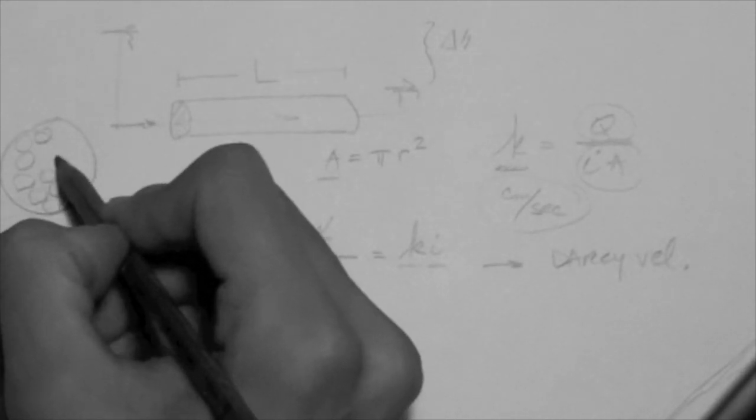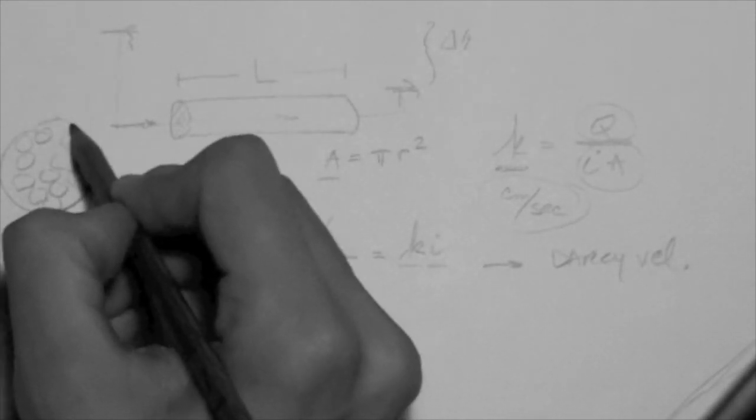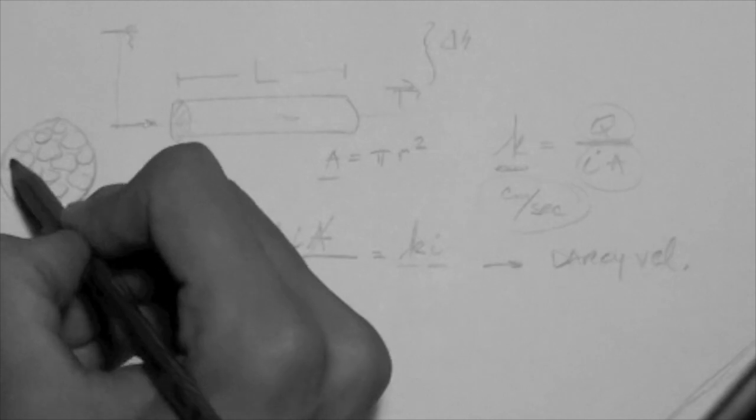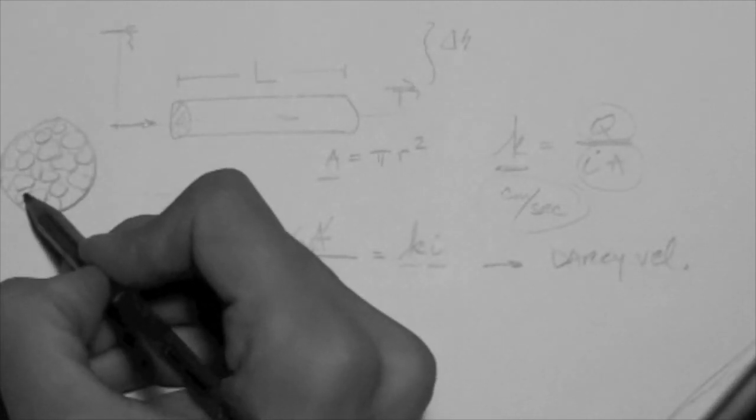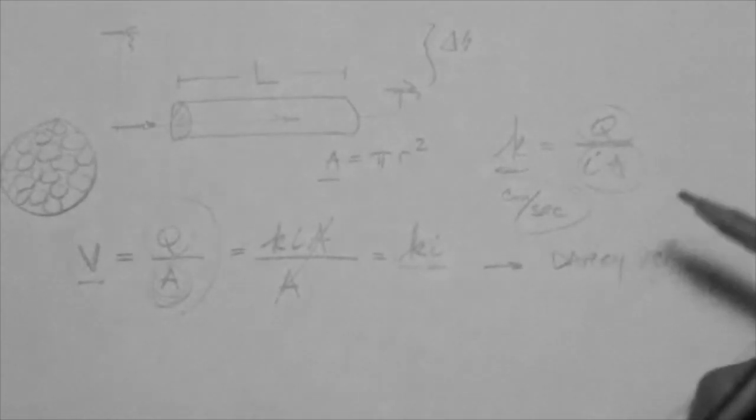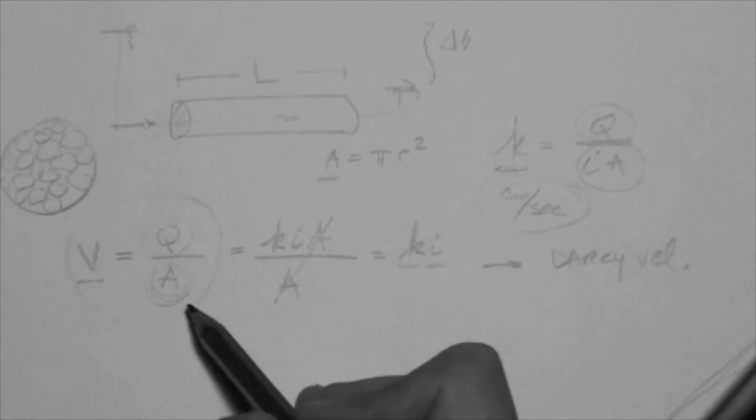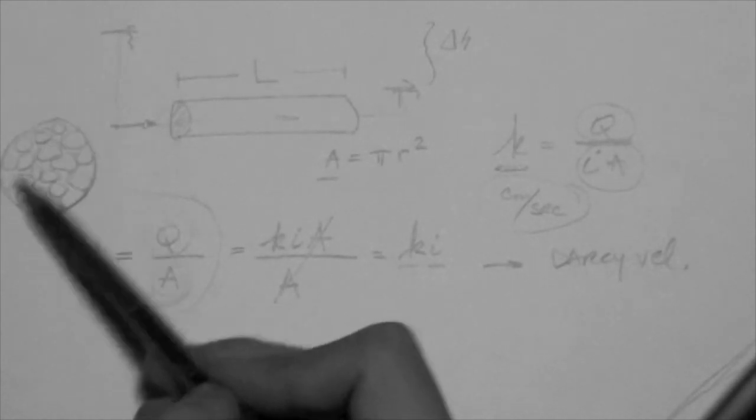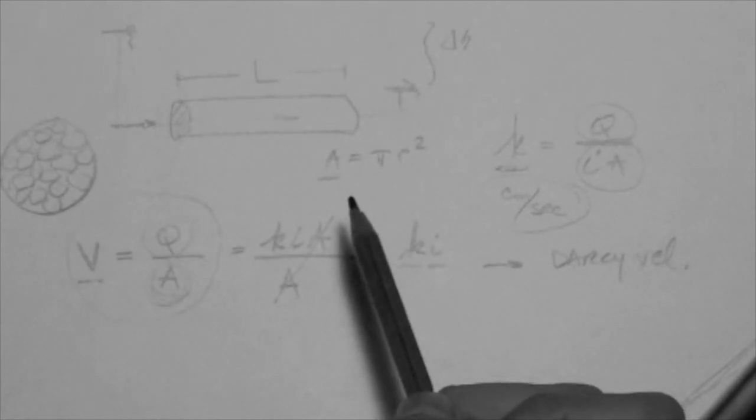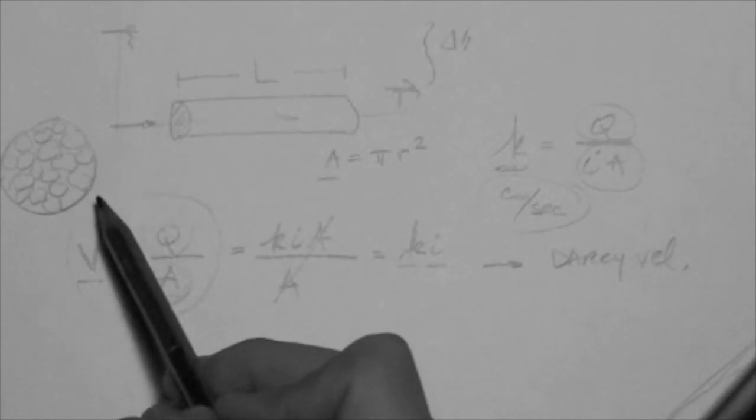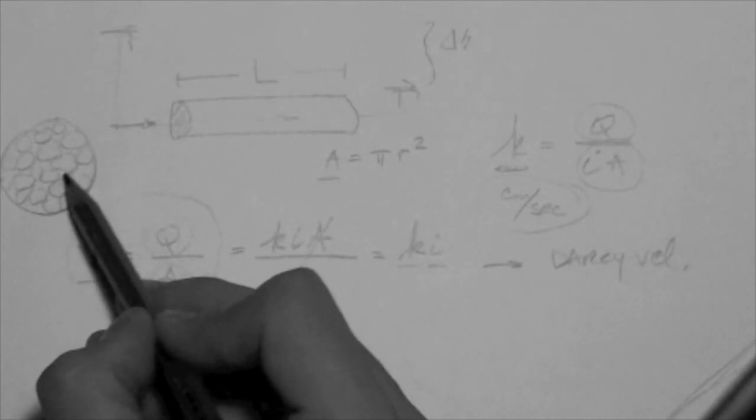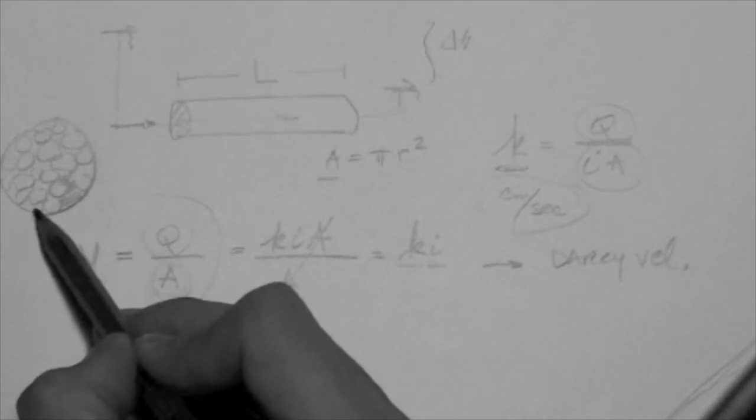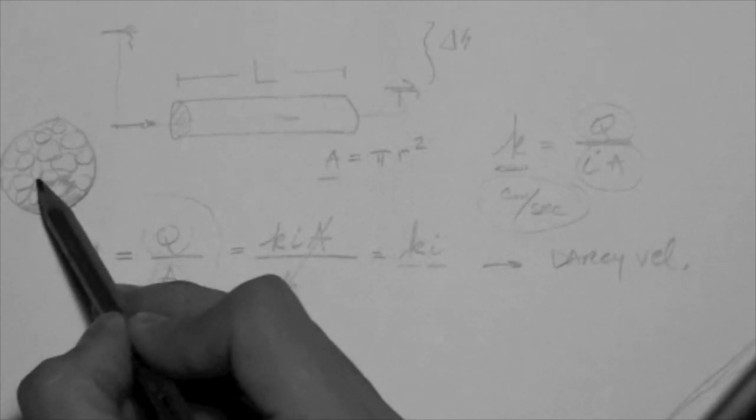If we were to look in here, we would basically see the cylinder and we would see the particles in there. Let's say they are kind of big particles. These are the soil particles. Now, is it reasonable to say that fluid flows through this whole area? The answer is no, because fluid doesn't flow through particles. It only flows through the pore space.